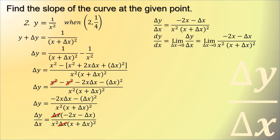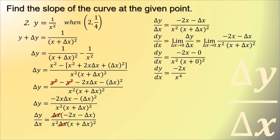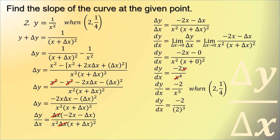Dividing both sides by delta x while factoring out delta x from the numerator gives delta x times (negative 2x - delta x), which cancels with the delta x on the other side. That leaves (negative 2x - delta x) over x² times (x + delta x)². Taking the limit as delta x approaches 0 by substituting 0, the result is negative 2x over x⁴, which simplifies to negative 2 over x³. Substituting x = 2 gives negative 2 over 8, so dy/dx = negative 1/4.